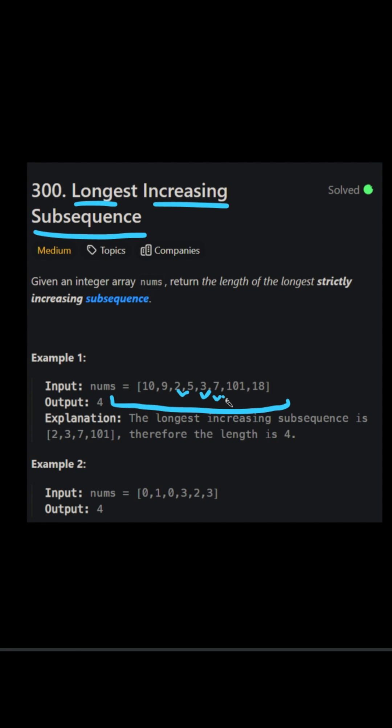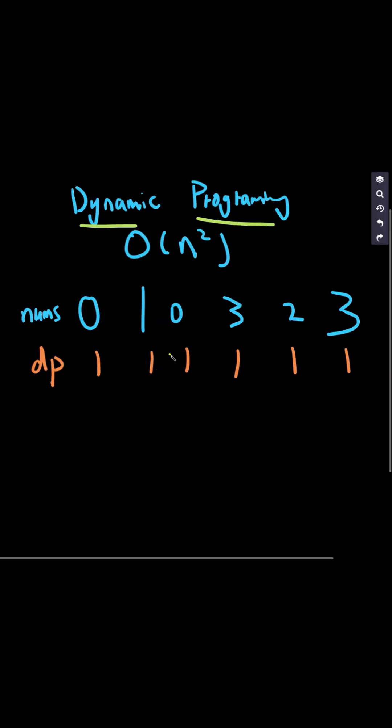Another example will be 0, 1, 2, 3. We can clearly see that at this point, the longest increasing subsequence is this subarray.